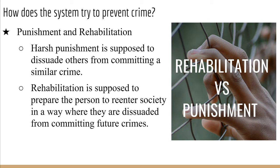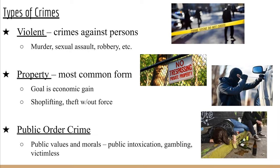Now we're going on to the types of crimes — there are six. First, violent crimes, or crimes against the person. These are the ones movies get written about: murder, sex crimes, and robbery. Property crimes are the most common form, like trespassing, stealing a car, and shoplifting — you are taking someone's property. As John Locke said, you are entitled to your life, liberty, and property; violent crimes tend to affect life and liberty, while property crimes affect your property.